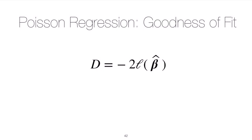In this video we'll consider some goodness-of-fit metrics for the Poisson regression model. We'll look at the deviance method, and in a future video we'll look at the Pearson's chi-squared method. Generally, we can think about the deviance of a generalized linear model as negative 2 times the log-likelihood of the GLM evaluated at the MLEs. This quantity is the deviance.